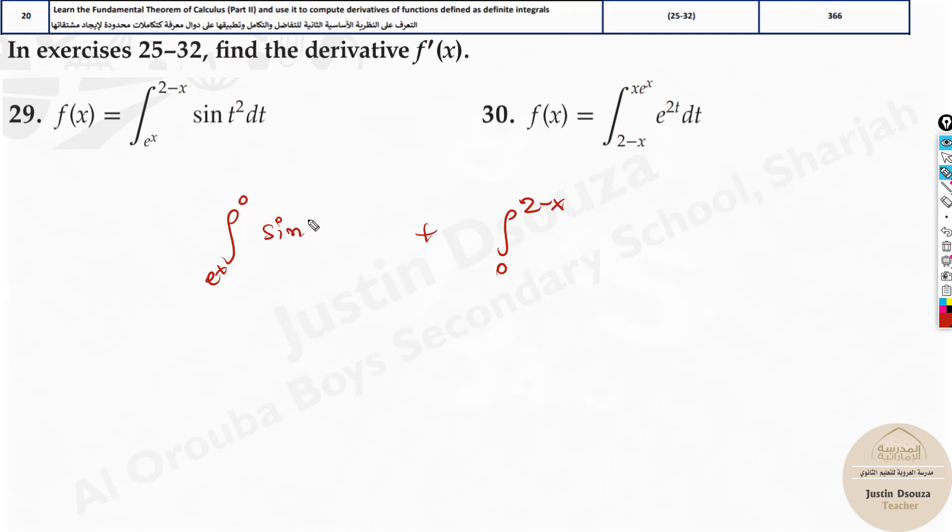So this is how you can split it out. Over here, what happens? It'll be sin t squared dt. Here also, it'll be sin t squared dt. Now, here we cannot have the number up. So let's write minus integral e^x. So over here, it's 0. It'll be sin t squared dt plus over here, you can directly apply over here. There's no problem. It's 0. It is sin t squared dt.